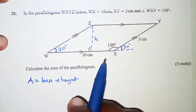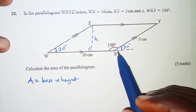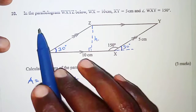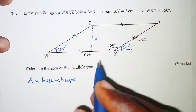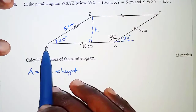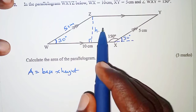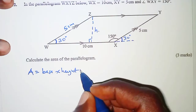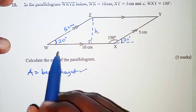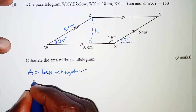With WX as a transversal, we have a right-angle triangle. WZ and XY are two parallel sides of the parallelogram, which are equal, so that side is 5 centimeters. Considering this triangle, h, 5 centimeters, and 30 degrees are related by opposite over hypotenuse, which is sine. So sine 30° = h / 5, giving h = 5 sine 30°.